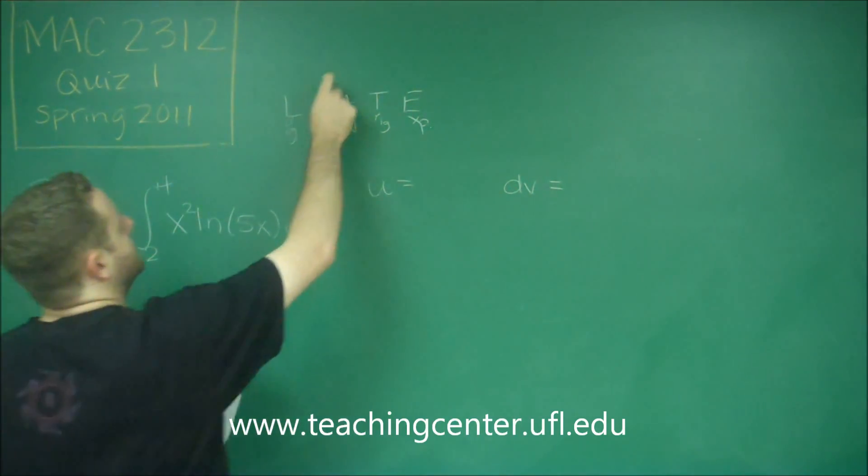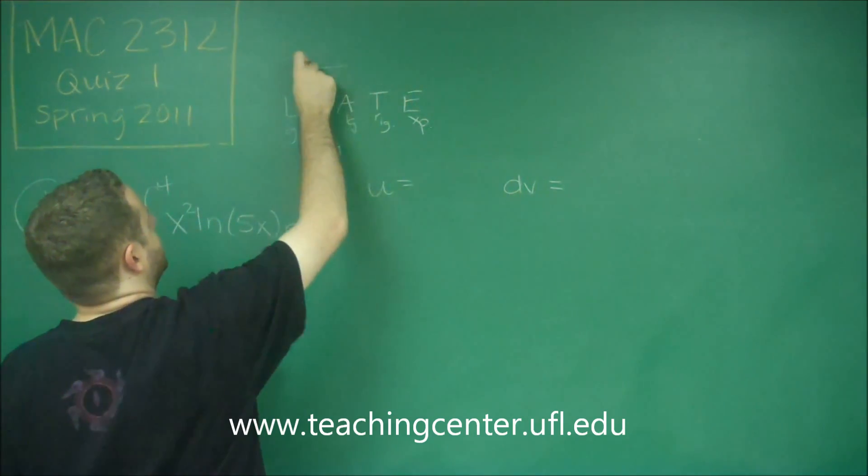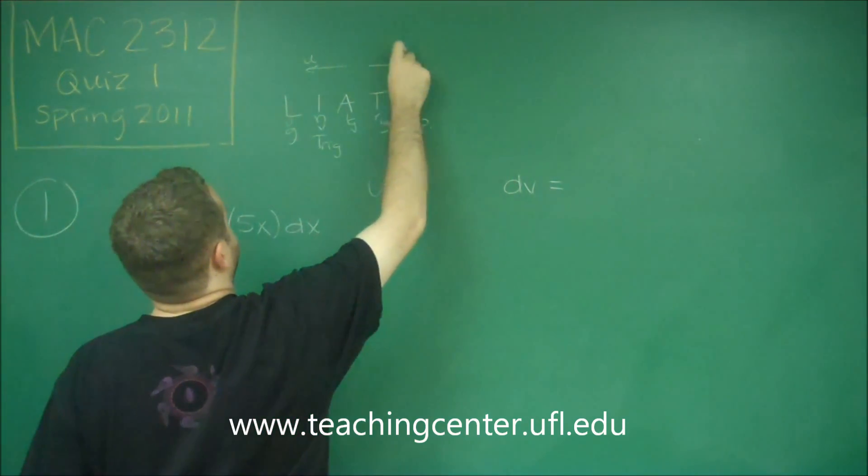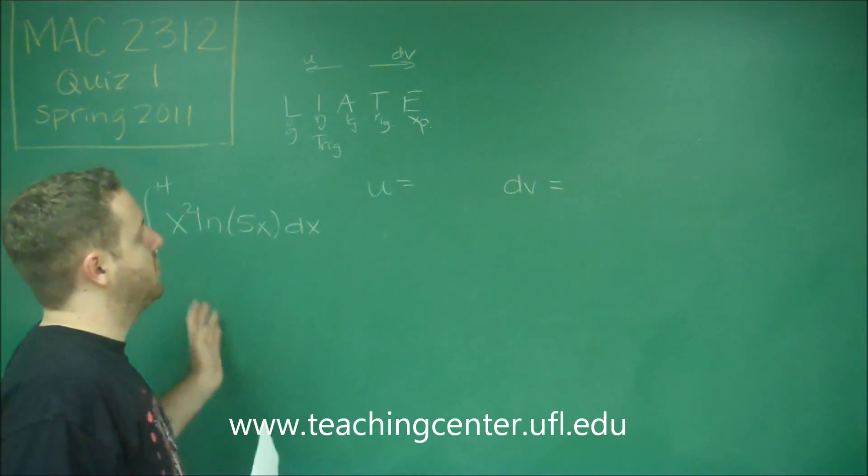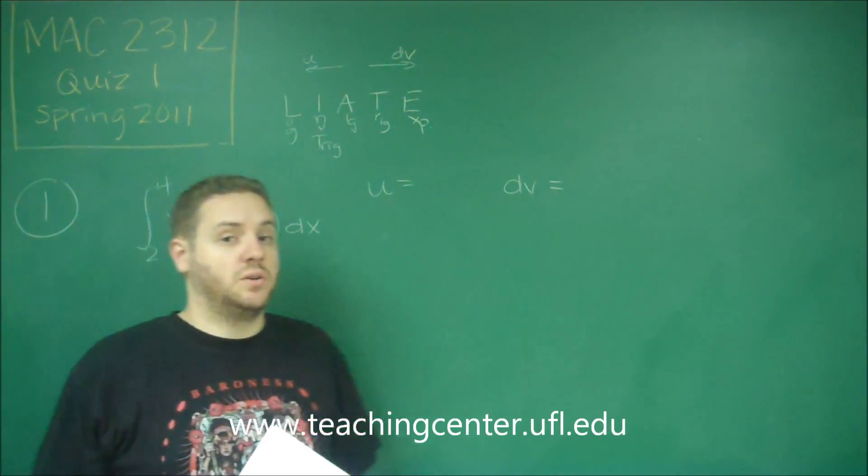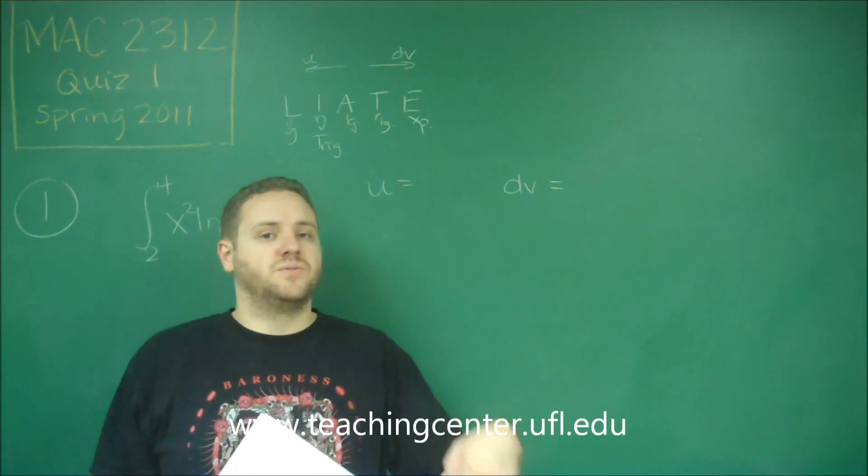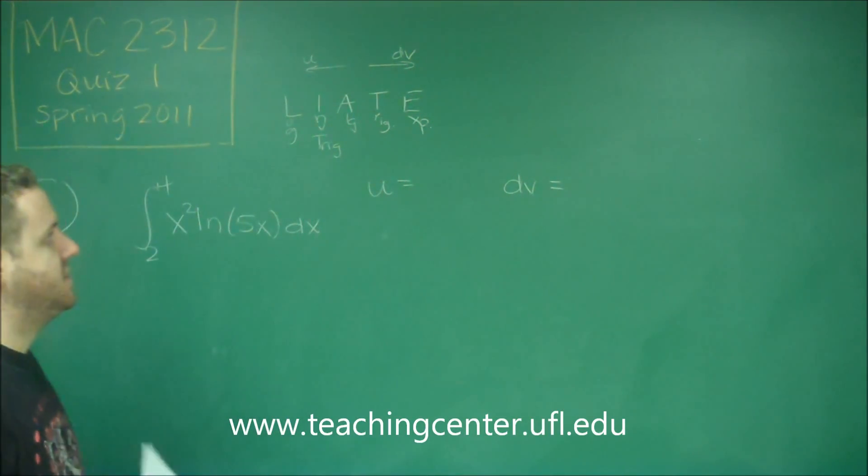What this tells you is if anything more to this side should be your U, and anything more to this side should be your dv. So if you have two parts of a function, whichever one's further to the left, that's the one you generally want to call your U. Whichever one's further to the right, that's what you would want to call your dv.